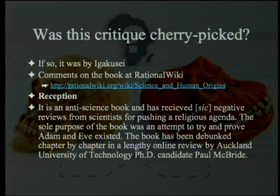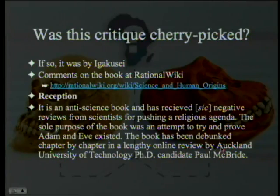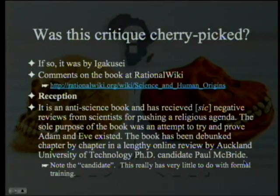An anti-science book has received negative reviews from scientists for pushing a religious agenda. The sole purpose of the book was an attempt to prove Adam and Eve existed, so they think Chapter 5 is the main rationale for the book. The book has been debunked chapter by chapter in a lengthy online review by Auckland University of Technology PhD candidate Paul McBride.